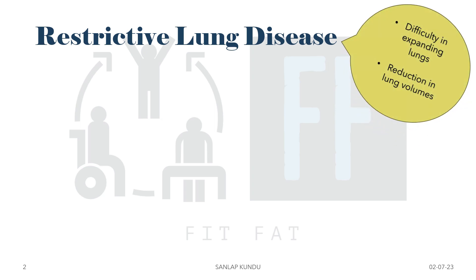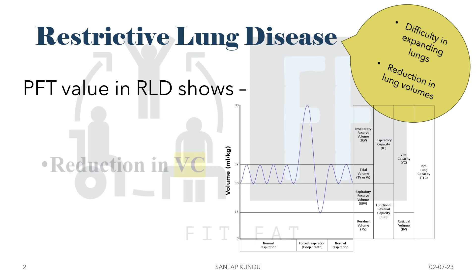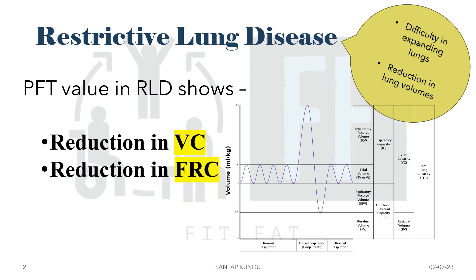When we say restrictive lung disease, the basic two points that define this disease are: first, there will be difficulty in expanding the lungs, and for that there will be a reduction in the lung volumes. When we do pulmonary function testing, the values show a reduction in vital capacity — which means the total amount of air exhaled after maximal inhalation. In RLD, there will be reduction of vital capacity.